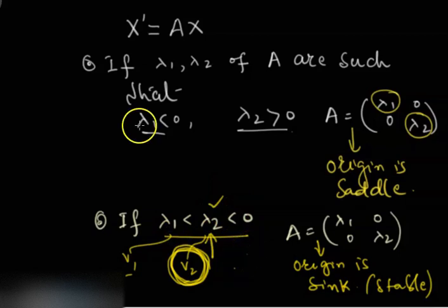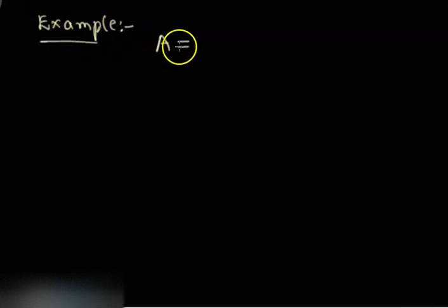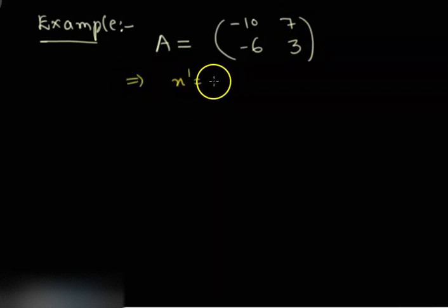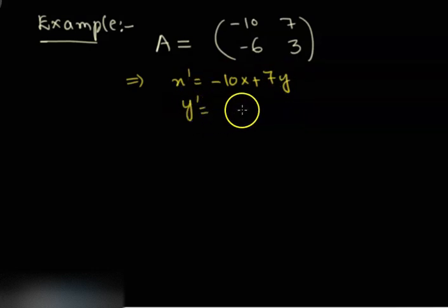Today we will consider one more example of a sink and then move to another category of eigenvalues. Let's consider the matrix A = [[-10, 7], [-6, 3]]. The corresponding system is x' = -10x + 7y and y' = -6x + 3y.